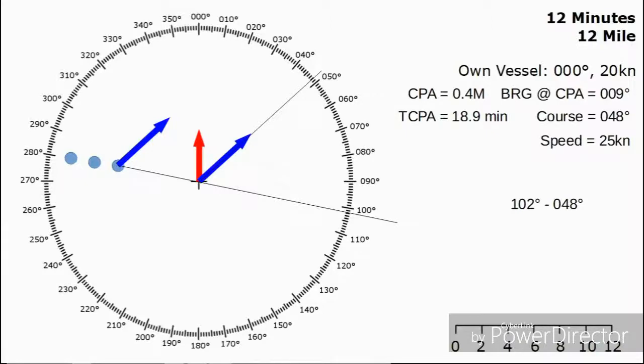So in this case, 102 minus our heading of 048, which is going to give us 54 degrees. We're on their starboard side, which is their green side, so the aspect is going to be green 54 degrees.